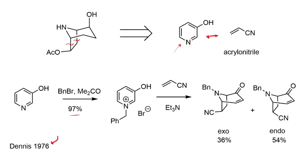Treatment of the quaternary salt with triethylamine in the presence of acrylonitrile gives an immediate increase in structural complexity — you get the cycloaddition between the acrylonitrile and the pyridine ring. We've gone from two completely flat and unsaturated building blocks to a very sp3-rich and structurally complicated scaffold. The desired compound is the exo product, which is unfortunately the minor product, as the endo product is favored by secondary orbital interactions. Both compounds were separable by chromatography, and with the reaction done on a 20-gram scale, plenty of material could be obtained.